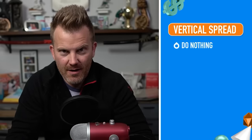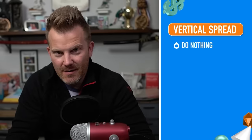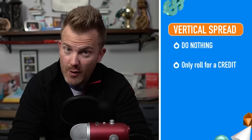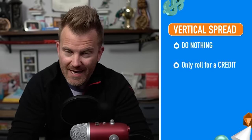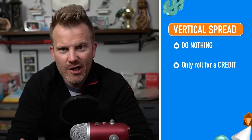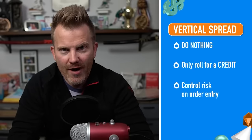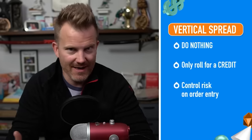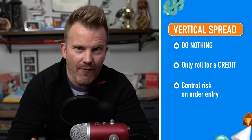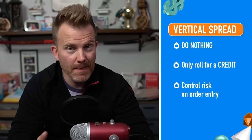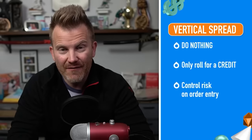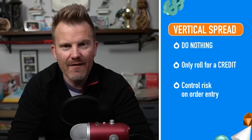What about losers — when the trade moves against you and the stock doesn't cooperate? To put it simply: nothing. You sit and you wait. If you can roll out at 21 days to go for a credit, do that, but if the strategy is too far gone and the stock hasn't come back, you wait. We control position sizing on order entry. With defined risk positions like a long vertical, if the stock doesn't cooperate, you just have to do nothing.